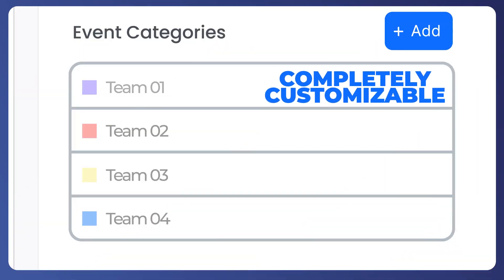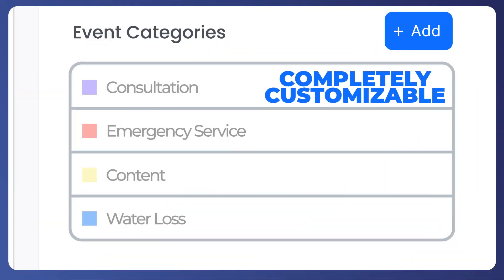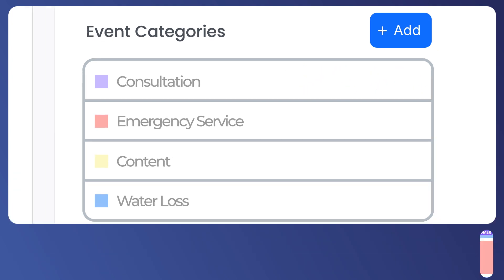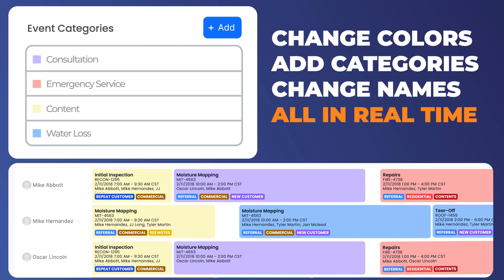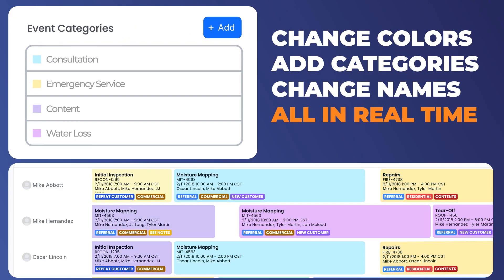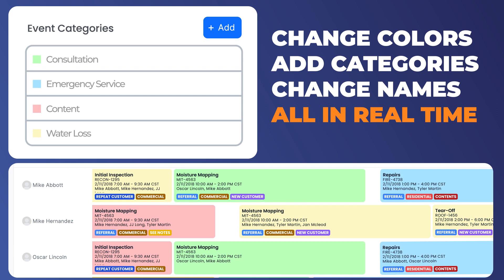Essentially, we created different event types with different color codings, so that way you can separate your emergency service jobs from contents jobs — jobs that need attention right away versus jobs that don't.